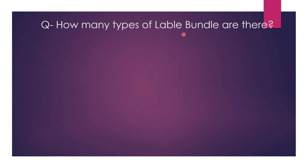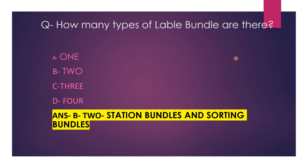Next question. How many types of label bundles are there? Options: A — 1; B — 2; C — 3; D — 4. The correct answer is option B, 2. There are two types of label bundle: station bundles and sorting bundles.